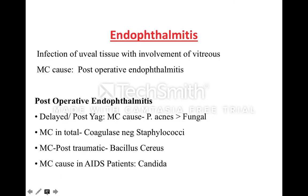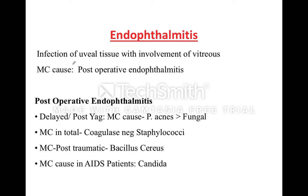We will talk about the treatment of endothalmitis. Remember, endothalmitis is one of the very important topics in your AIMS exam. Endothalmitis is defined as infection of uveal tissue. There are three layers in the eye: the retina, the choroid, and the sclera. The choroid, the iris, and the ciliary body constitute the uveal tissue.